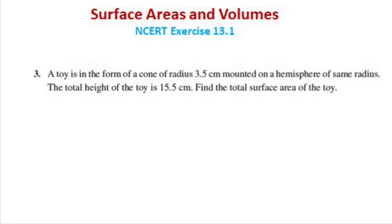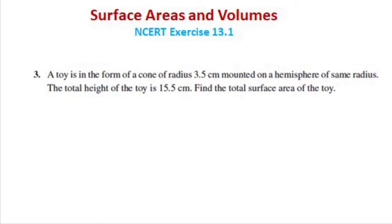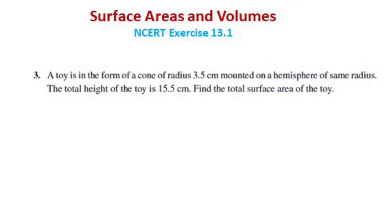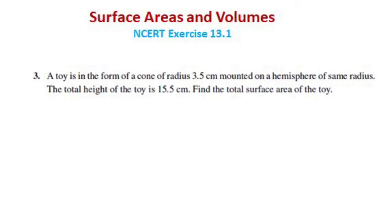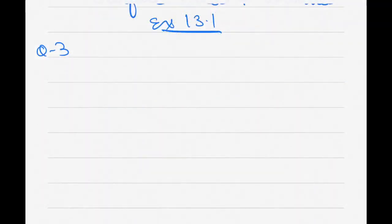Question 3: A toy is in the form of a cone of radius 3.5 centimeter mounted on a hemisphere of the same radius. The total height of the toy is 15.5 centimeter. Find the total surface area of the toy. Drawing the diagram: the cone sits on top of the hemisphere.